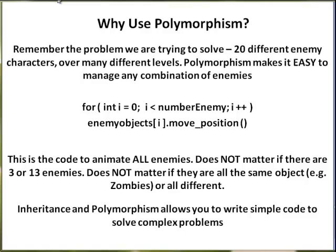This is the code to animate all enemies. It does not matter if there are three or thirteen enemies, or if they're all the same object or all different types. The first time through the loop, when i equals zero and there's a zombie object in slot zero, the call to move position updates the x and y position so it moves in a zombie pattern. The second time through the loop, when i equals one, there is a drone in slot one, so move position executes and it flies to a different position.